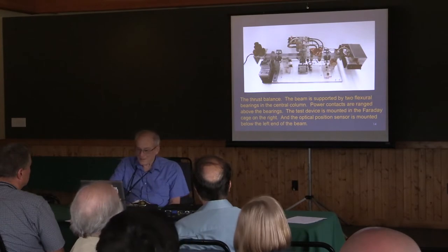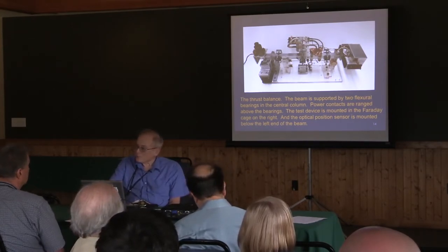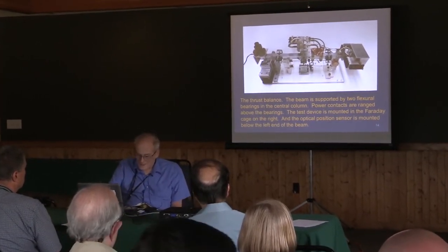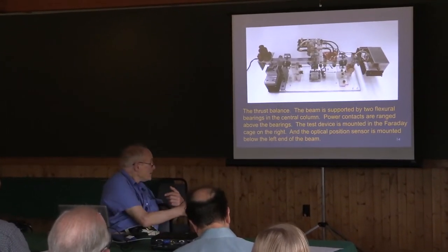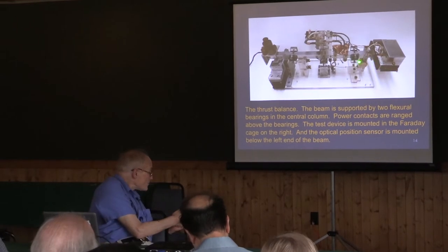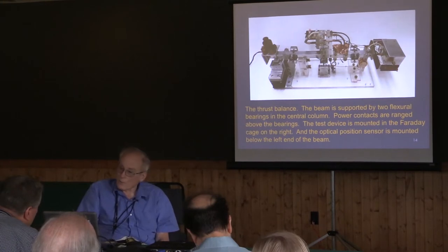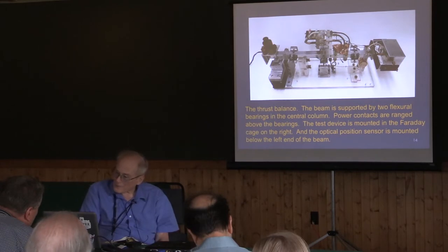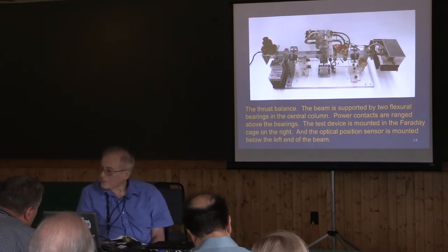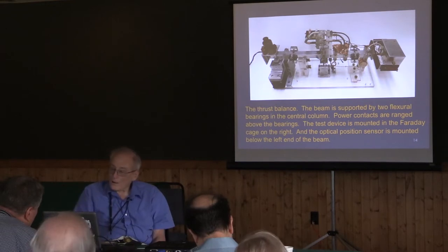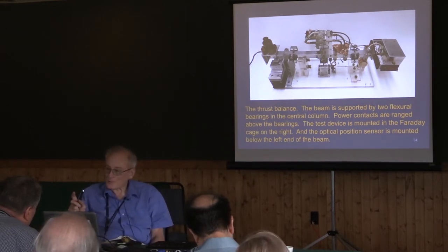This is what the balance looks like. On the right-hand side, that box is the completed Faraday cage that the device sits in. Just inboard from that are 35-millimeter film canister caps wound with 10 turns of wire, set up so that you can calibrate the balance. Someone asks about magnetic fields — we're going to get to magnetic fields when I show the movies, right after the movies. One of the tests that simply wipes out one of the major potential problems is checking for magnetic field effects.